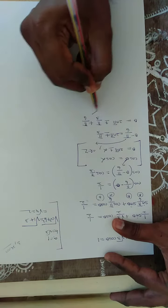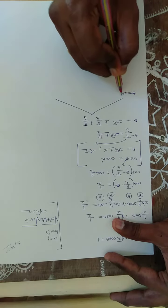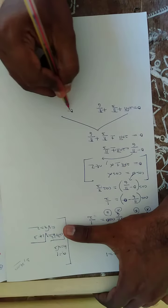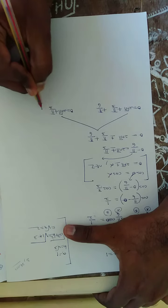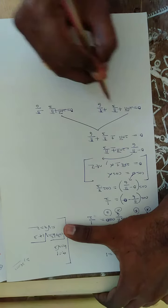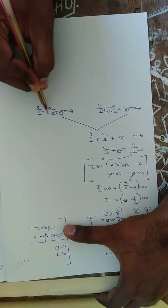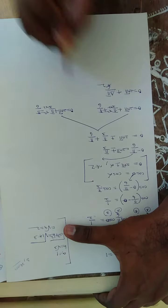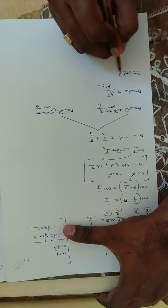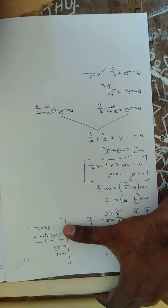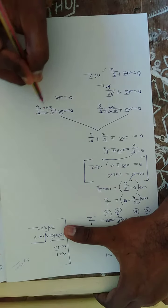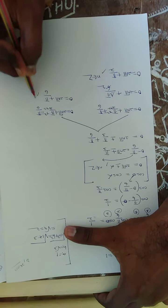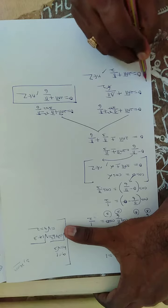From this, taking the plus case: θ = 2nπ + π/3 + π/6. LCM is 6, so π/3 + π/6 = 2π/6 + π/6 = 3π/6 = π/2. Thus θ = 2nπ + π/2. Taking the minus case: θ = 2nπ - π/3 + π/6 = 2nπ - π/6, n belongs to Z. These are the required answers.